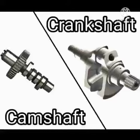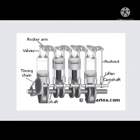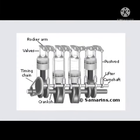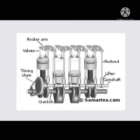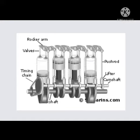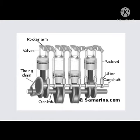The camshaft is an oval-type system and it operates the push rod and valve for timing. I showed you a general video on how to operate the crankshaft and camshaft, and how the camshaft operates the rocker arm to open and close the valve for the piston.